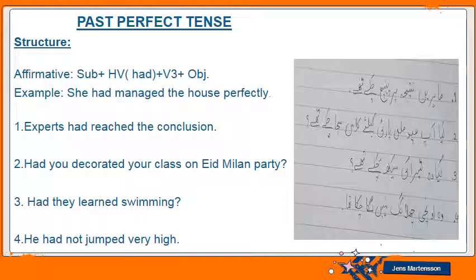Now see the sentence construction. 'Experts had reached the conclusion.' Subject 'experts', helping verb 'had', third form of the verb 'reached', object 'the conclusion'. See the next one — an interrogative: 'Had you decorated your class for Eid Milan party?' To make it interrogative, bring the helping verb first. So: 'Had they learned swimming?' — question mark will be added.